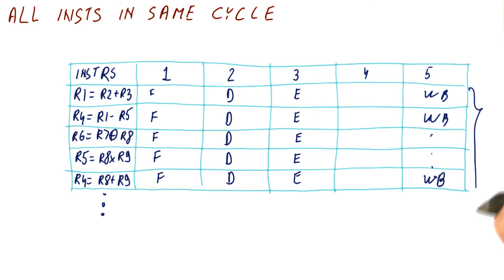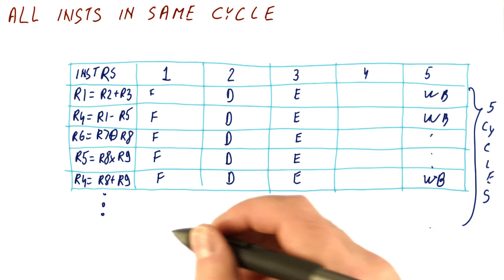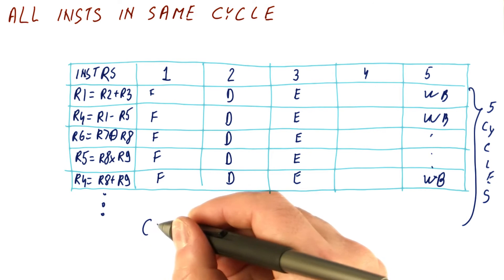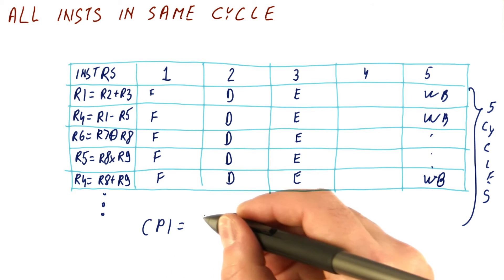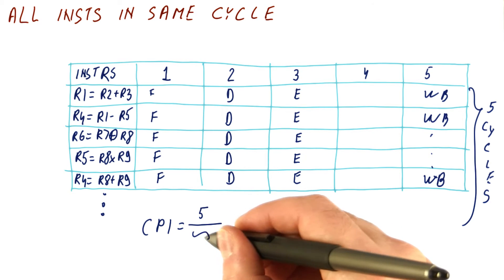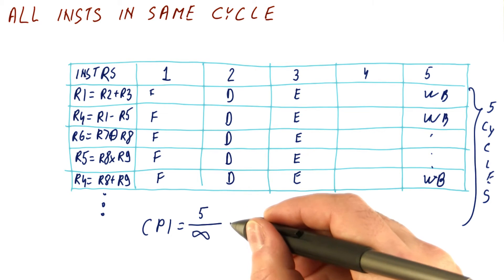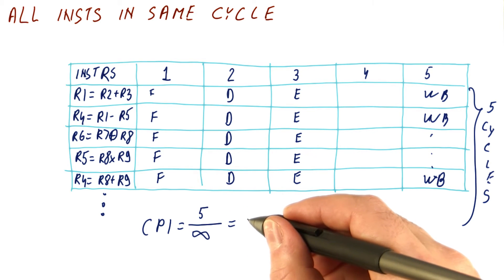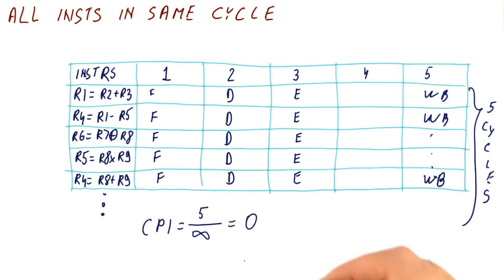So if we have five cycles for a very large number of instructions, the CPI is going to be five cycles for pretty much an infinite number of instructions, which is going to be very close to zero. We get a CPI of essentially zero, which is very good — basically almost zero cycles per instruction. So that's wonderful.